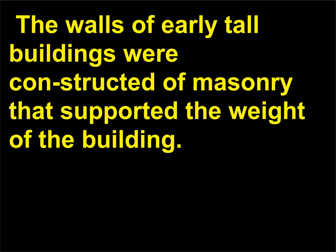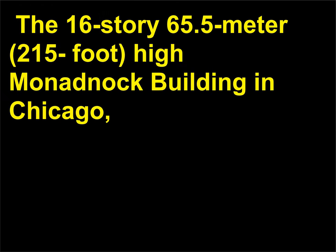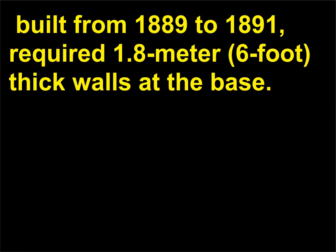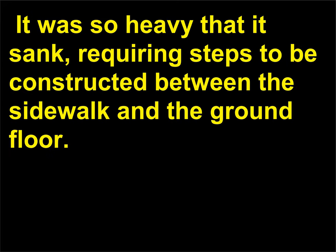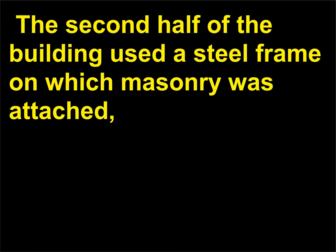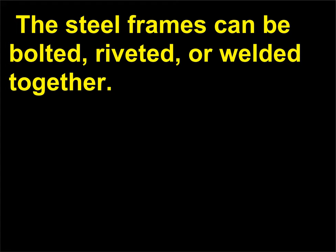The walls of early tall buildings were constructed of masonry that supported the weight of the building. The 16-story 65.5-meter, 215-foot, high Monadnock building in Chicago, built from 1889 to 1891, required 1.8-meter, 6-foot, thick walls at the base. It was so heavy that it sank, requiring steps to be constructed between the sidewalk and the ground floor. The second half of the building used a steel frame on which masonry was attached, allowing much wider windows to be used. The steel frames can be bolted, riveted, or welded together.